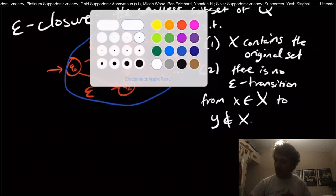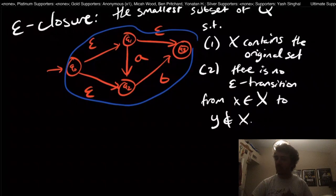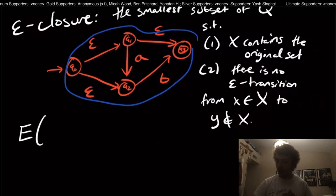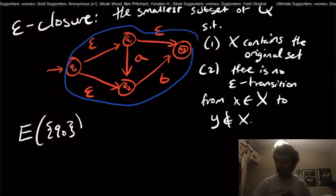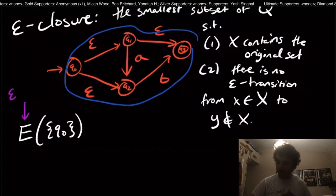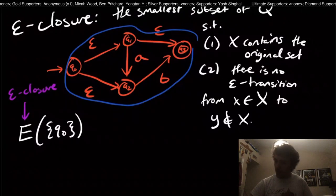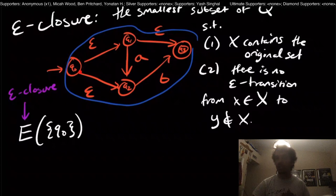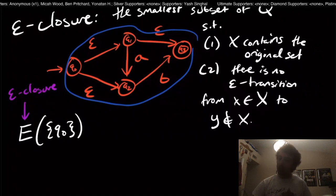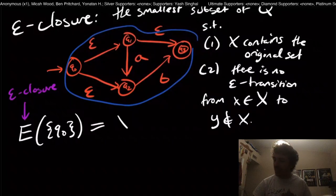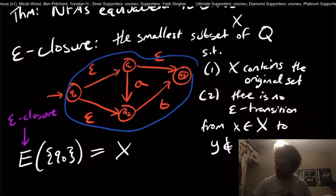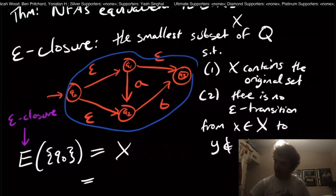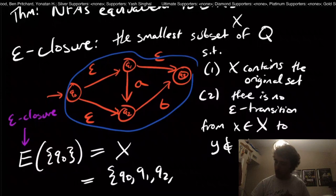Okay, so what we can say here is that the epsilon closure of the state Q0 is all four of these states. And the way that we're going to write this is E of the set containing Q0. So what does this mean? The E here means epsilon closure. And the Q0 here is the set of states that we are starting with. So we're just starting with a single state. So that's why we have a set containing one thing in there. So then what this will give us is the set X that is mentioned right here. And what is the set X in this case? Well, we have determined that it's all four of these states right here. So that is the set Q0, Q1, Q2, Q3.